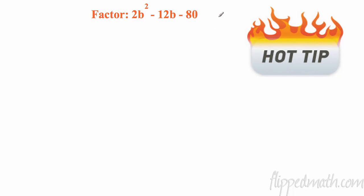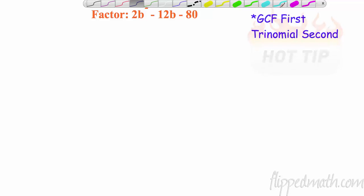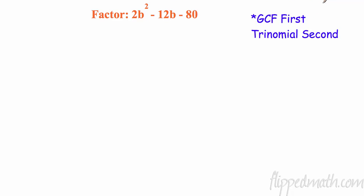Here we go — double factoring. So what is double factoring? That means we're going to have a GCF and then a trinomial. We're going to do our GCF first. Looking for a greatest common factor between 2, 12, and 80 — I can take a 2 out. When I take that out, what's left is b squared minus 6b minus 40.